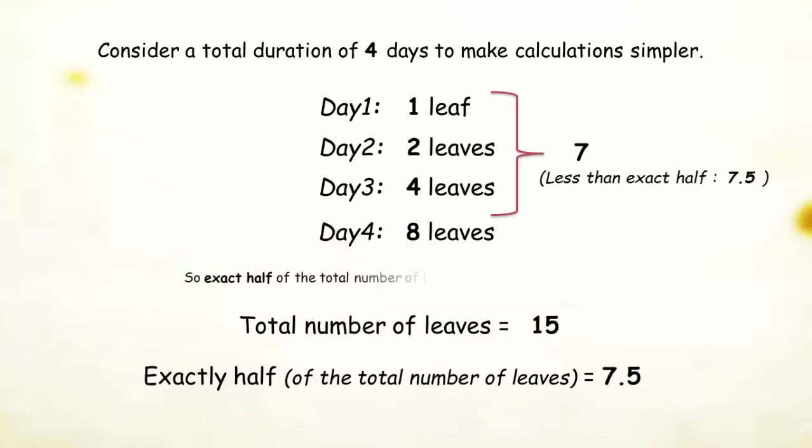So, eventually, the exact half can only be completed on the last day when the worm eats half portion of a leaf on the last day to make it 7.5. So, exact half of the total number of leaves are finished only on the final day.